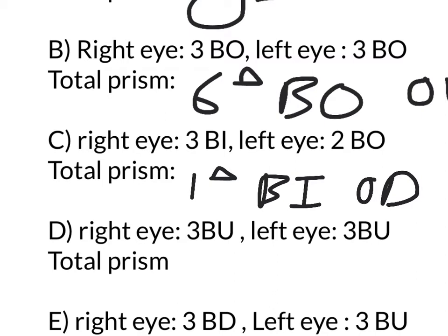Okay, let's go to D. In the right eye you get 3 base up, and in the left eye you have 3 base up. Now we're dealing with vertical prisms, but the concept is exactly the same. Do you add them or do you subtract them? In this case, the total prism is 0 — you subtract them because they're pointing in the same direction. You can draw it out: draw 3 base up in the right eye and 3 base up in the left eye.